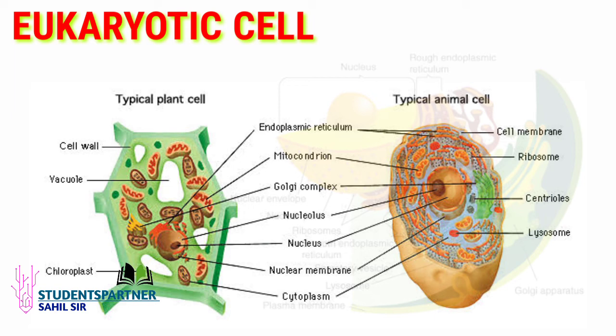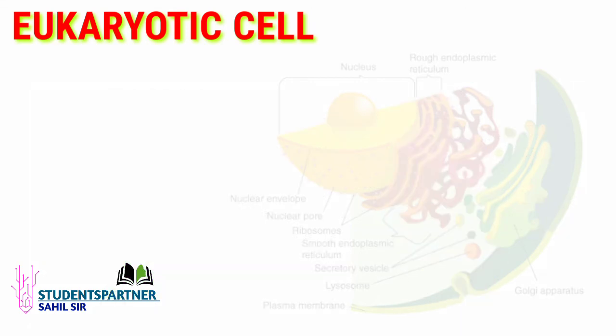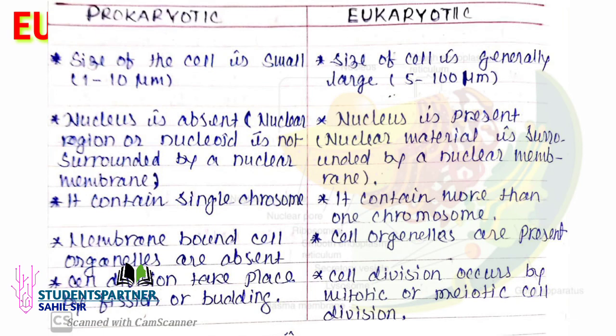The size of eukaryotic cells is 5 to 100 micrometers. The nucleus is present and surrounded on all sides by a nuclear membrane. They contain more than one chromosome — whereas in prokaryotic cells there is only one chromosome. Cell division occurs by mitotic and meiotic cell division.